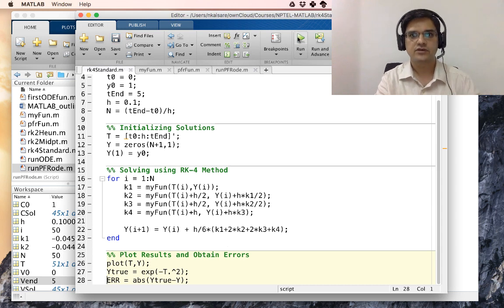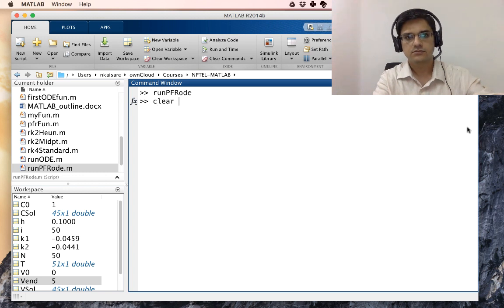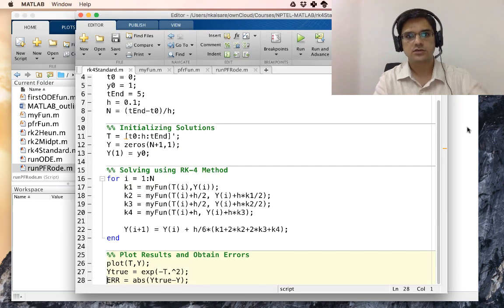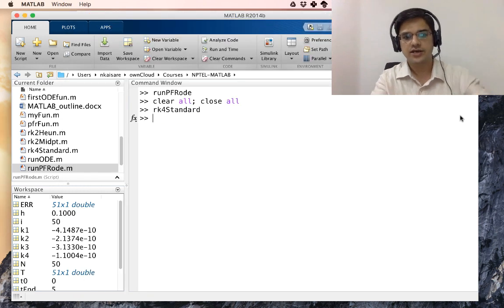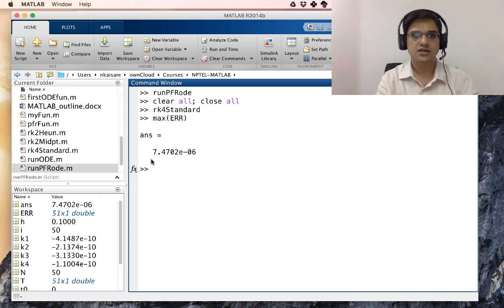Let us save this and let us first clear everything and run our RK4 standard. And we see the same curve. This curve looks similar to what we had earlier. Let us check on max error. The max error is 7.5 multiplied by 10 to the power minus 6.